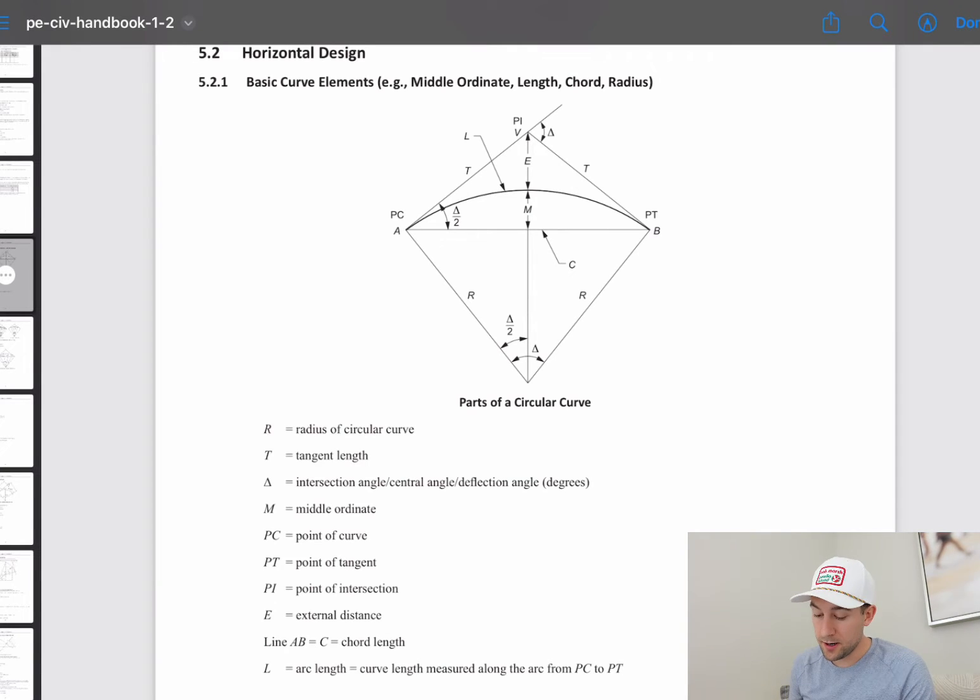So one of the first things I actually see here for the horizontal design is L. So L is all the way down at the bottom there. L equals the arc length, which is the curve length measured along the arc from PC to PT. So if we can solve for this L, then we can plug that in and solve for PT.